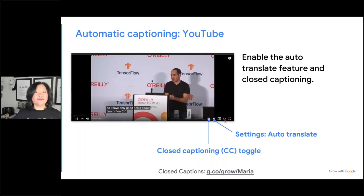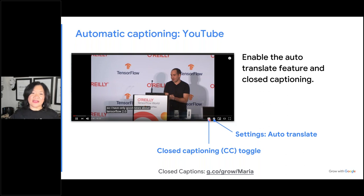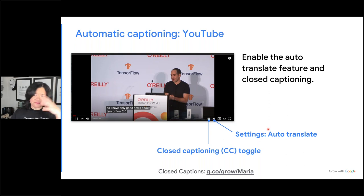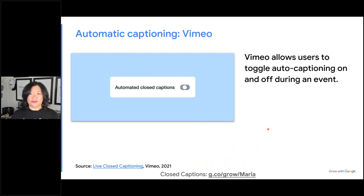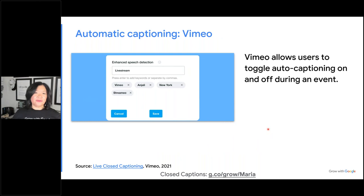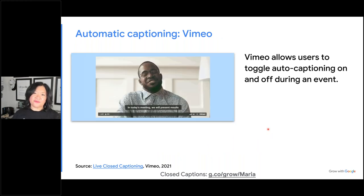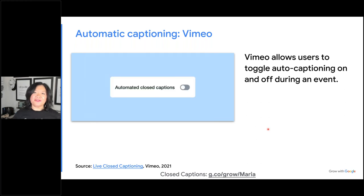On YouTube, you can look at the auto-translate settings and turn closed captioning on. You can click on the CC — as we saw in the video at the beginning of this session — and set auto-translate so viewers can get it in the language they're most comfortable with. You can do that already with YouTube. With Vimeo, that's also available. If you have a Vimeo account and prefer it for video, you can put auto captioning in with Vimeo as well. A lot of tools are now being more aware and providing more accessibility.